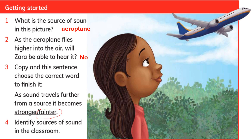What is the source of sound in this picture? It's the aeroplane. As the aeroplane flies higher into the air, will Zara be able to hear it? No, she cannot hear it. Copy the sentence and choose the correct word to finish it: a sound travels further from its source — it becomes stronger or fainter. It's fainter.